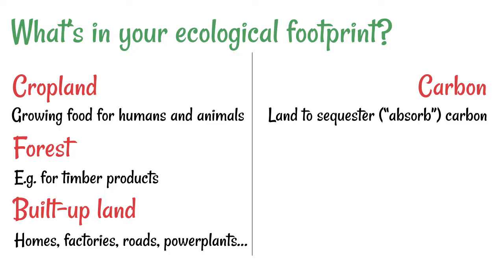Next, what about carbon? That's the land required to sequester — which essentially means absorb — the carbon that they release. For example, if they burn fossil fuels they are releasing carbon dioxide into the atmosphere, and it requires plants to take that back in. So what area of land with plants is required to do that?